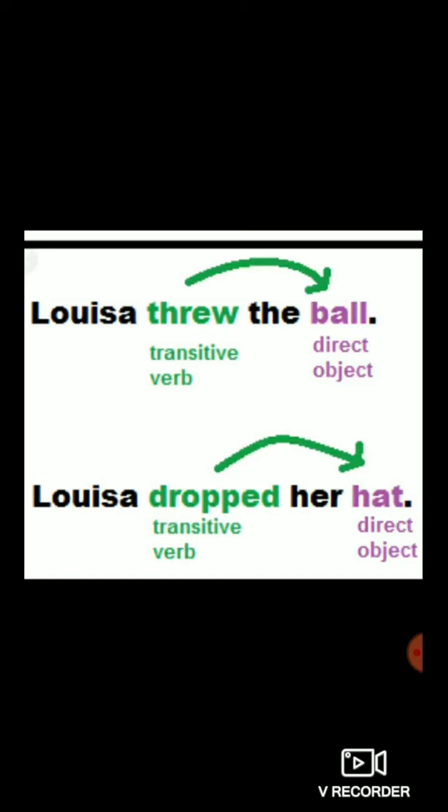Second: 'Louisa dropped her hat.' Dropped is a verb. After the verb, you can see an object — her hat. Hat is a direct object here. What did Louisa drop? Her hat. After the verb dropped, there is an object. So dropped is a transitive verb.